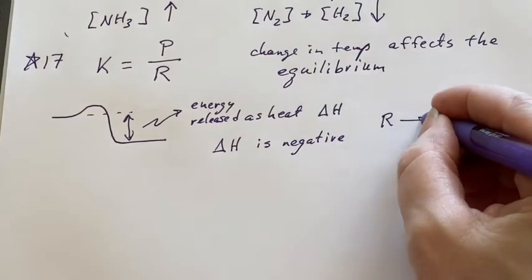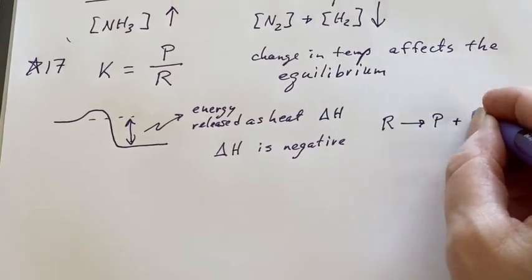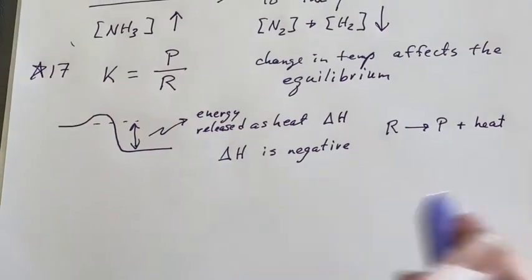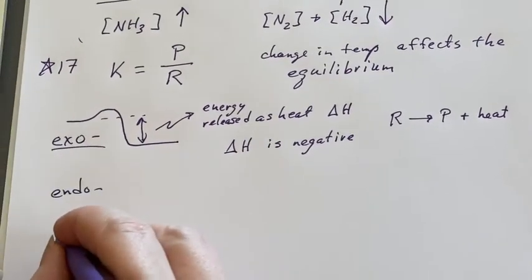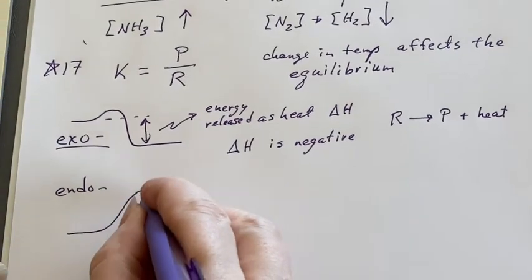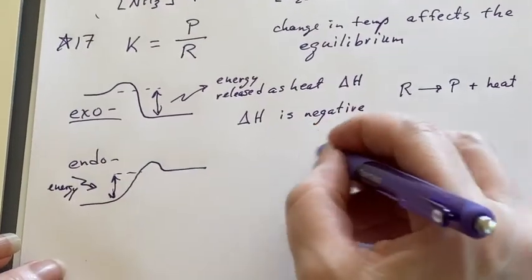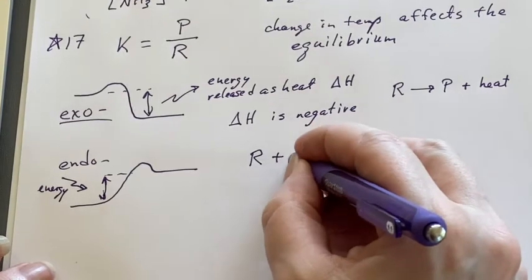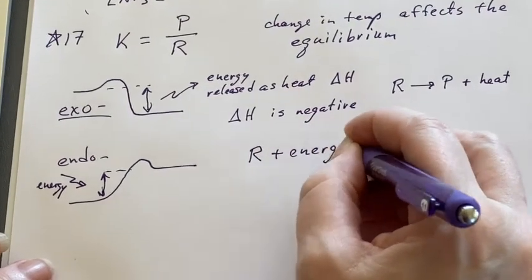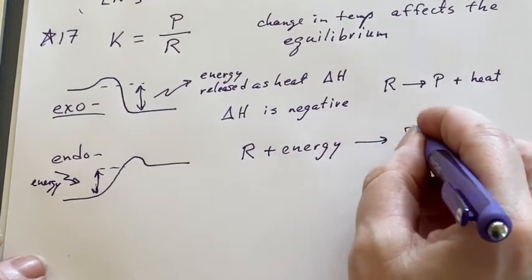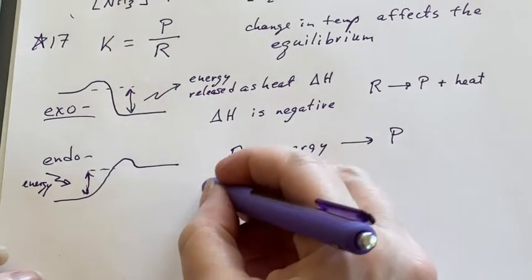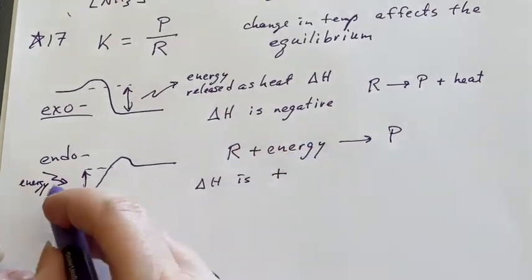If we have an endothermic one, then we are ending up putting energy into it. That would mean that we had reactants plus energy, because we had to add the energy to make this happen, and then it becomes products. This delta H is going to be positive because it is now included in the system.